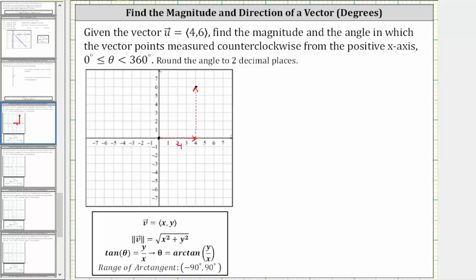Which means the vector u in standard position is this vector. Notice by sketching the x and y components, we now have a right triangle that we can use to determine the magnitude as well as the direction of the vector.